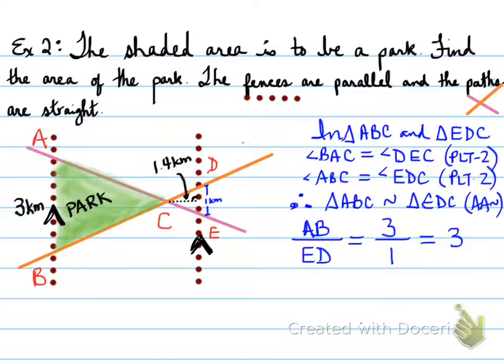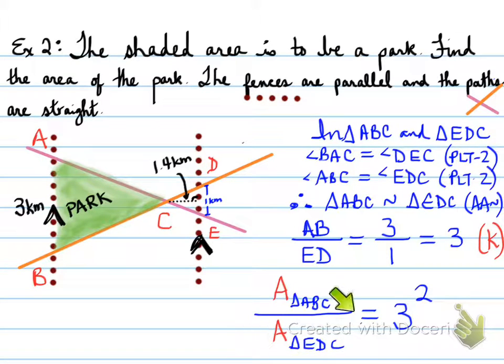Now what I can do is find the area of one triangle and compare it to the area of the other triangle. Area, and when I compare them, that has to equal the K factor squared when I compare them. So I can find this information. Knowing the scale factor, that will give me this information.